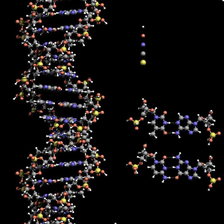DNA was first isolated by the Swiss physician Friedrich Miescher who, in 1869, discovered a microscopic substance in the pus of discarded surgical bandages. As it resided in the nuclei of cells, he called it 'nuclein'. In 1878, Albrecht Kossel isolated the non-protein component of 'nuclein' — nucleic acid — and later isolated its five primary nucleobases. In 1909, Phoebus Levene identified the base, sugar, and phosphate nucleotide unit of the RNA, then named 'yeast nucleic acid'. In 1929, Levene identified deoxyribose sugar in 'thymos nucleic acid' (DNA). Levene suggested that DNA consisted of a string of four nucleotide units linked together through the phosphate group — the 'tetranucleotide hypothesis'; he thought the chain was short and the bases repeated in a fixed order.